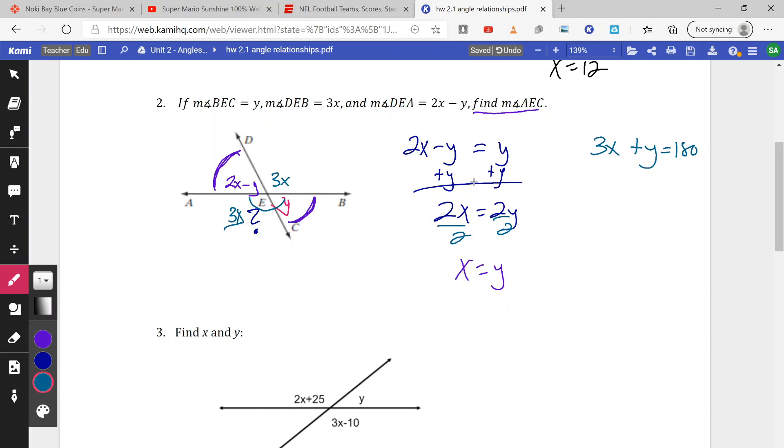Well, we know that x and y can be used interchangeably. So AEC, we have the variable x. So I'm going to replace the y with x because we want our answer to be with x. So 3x plus x is going to give me 180. Combine our like terms. 4x is 180. If we divide by 4, we get an x value of 45.